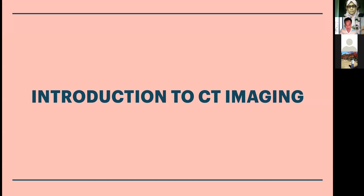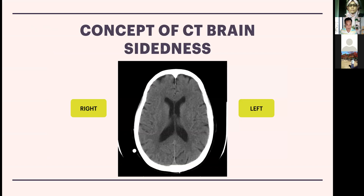On introduction to CT imaging — the concept of CT brain orientation: when there is an abnormality on the left-hand side of the image, it is actually on the right side of the patient. It is crisscross — the same principle applies to a chest X-ray as well.